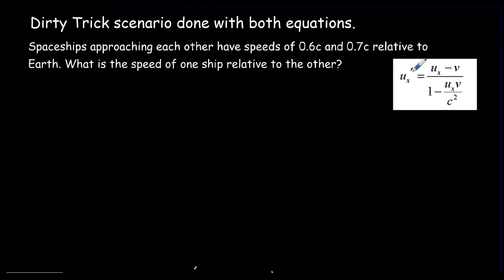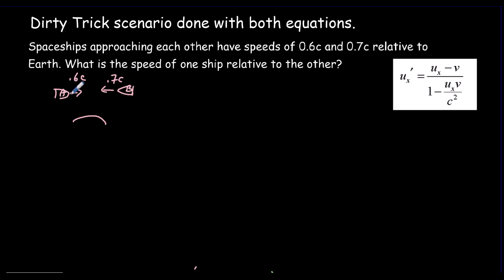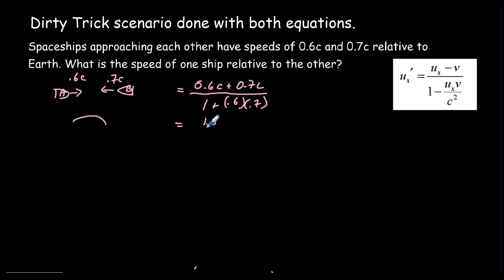The first thing to notice about this example is that it's one of our common scenarios: two speeds of 0.6C and 0.7C both measured relative to the Earth. We're asked for the speed of ship B relative to A — one of our common dirty trick scenarios. Using the quick way: the speed is 0.6C plus 0.7C all over 1 plus 0.6 times 0.7, which comes out to 1.3 divided by 1.42, giving an answer of 0.915C.